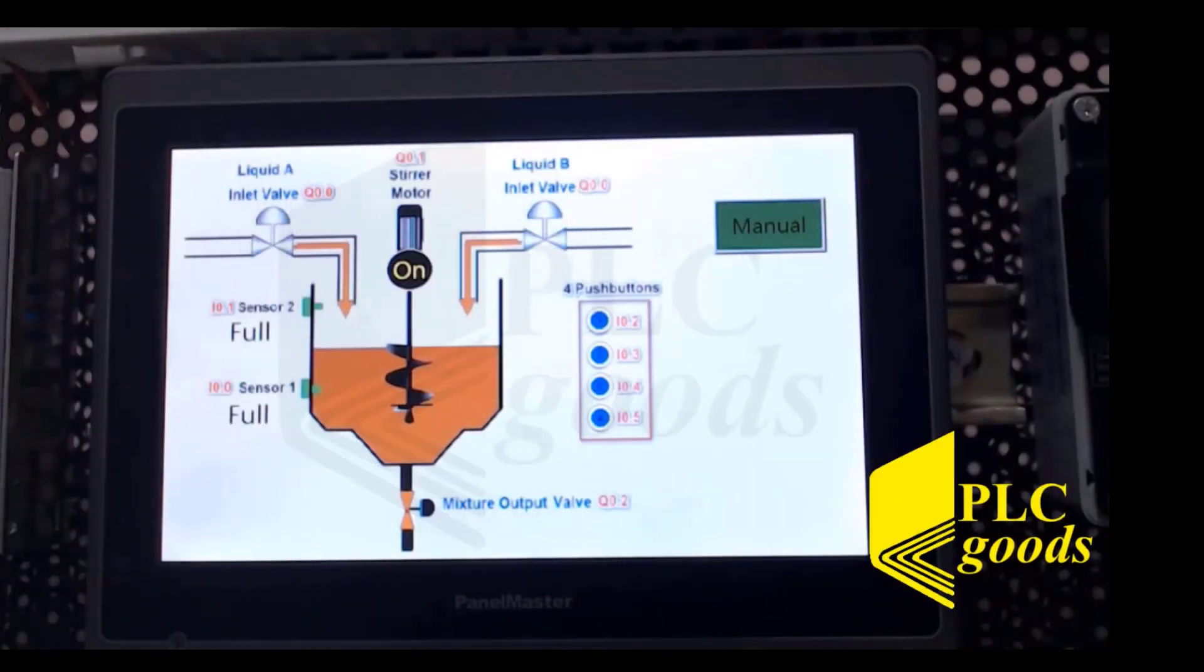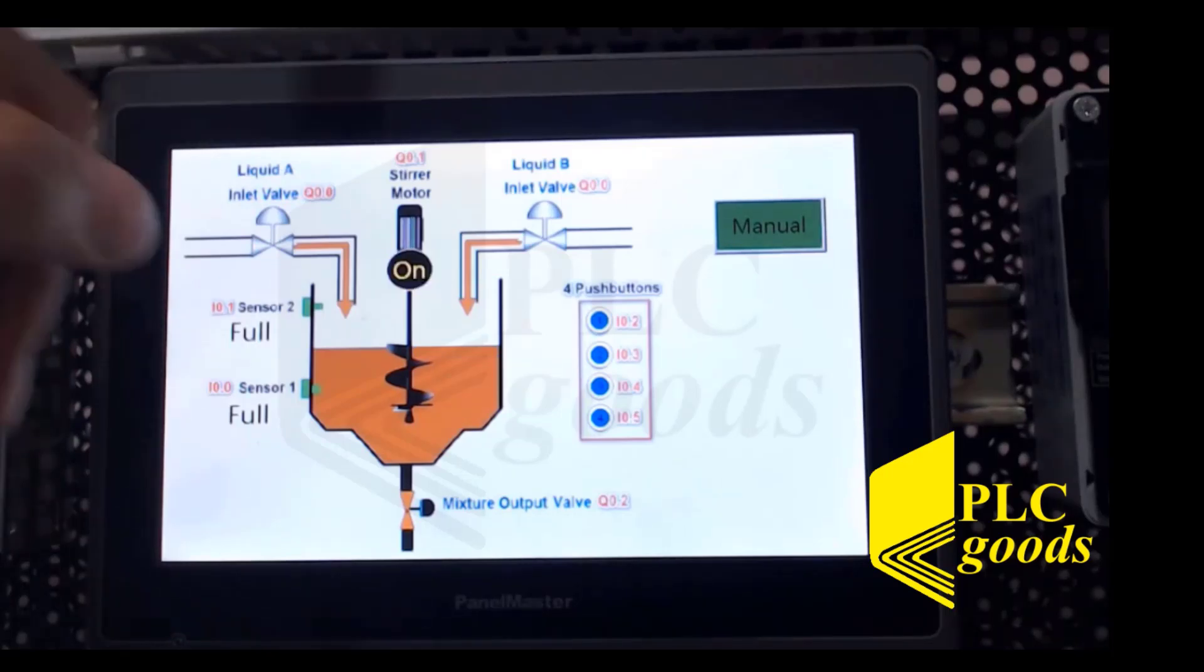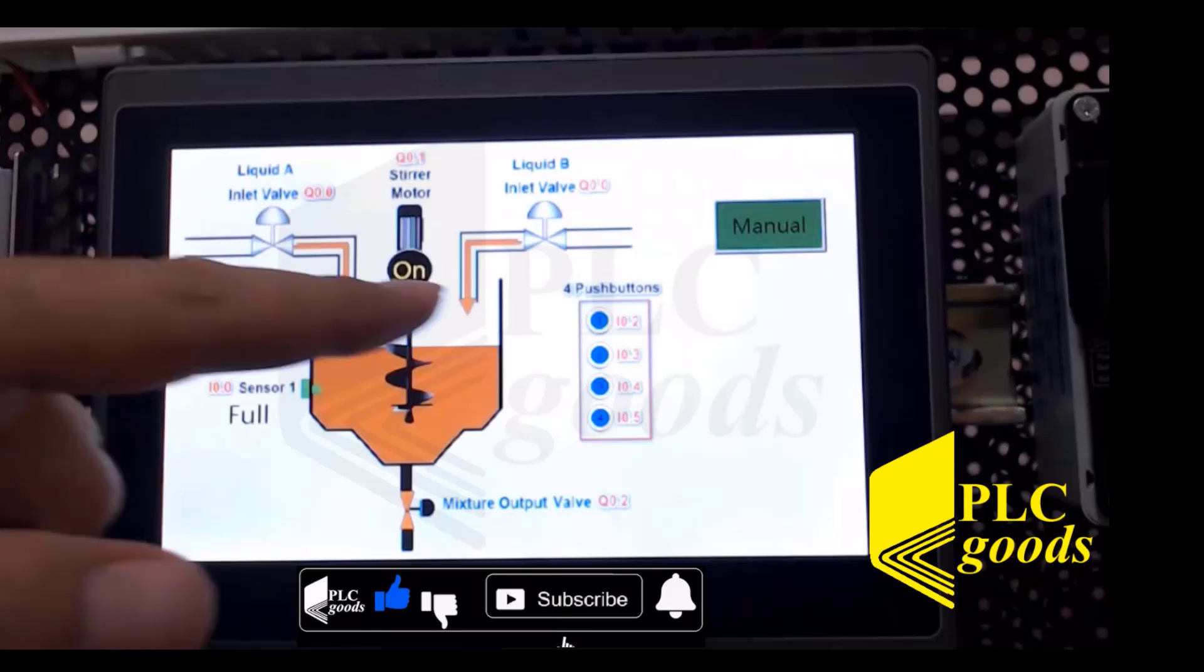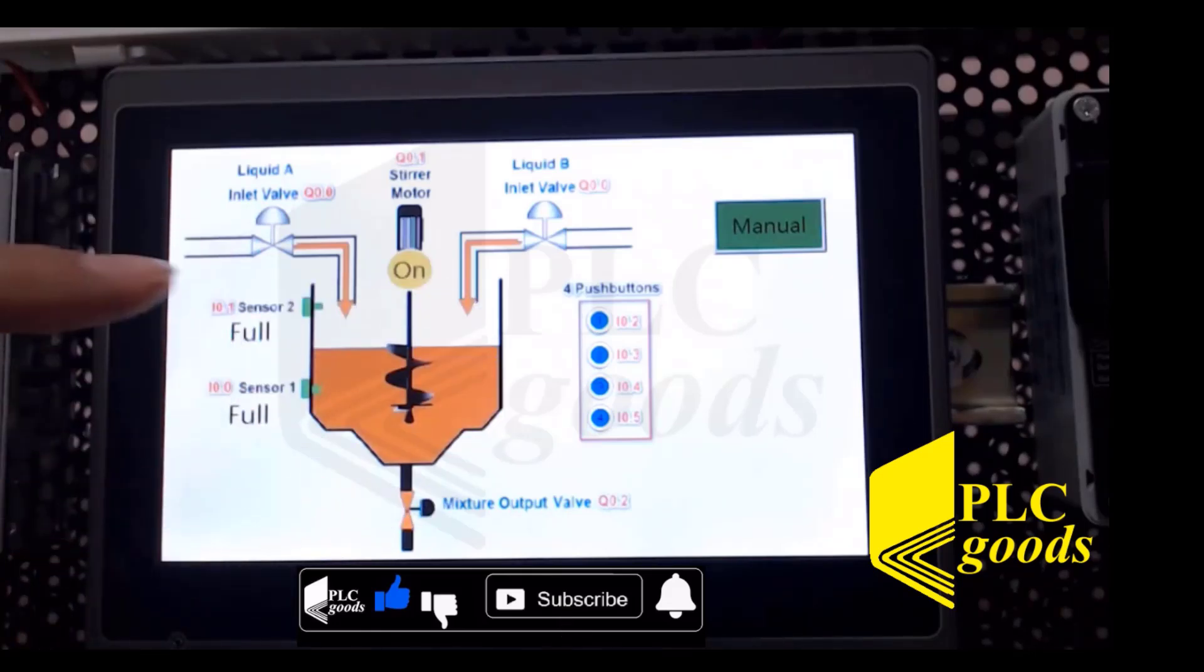Okay guys, here you see a system that has consisted of an HMI display device and the PLC that is on the bottom of it. As you see, it shows a container, it has two level sensors, sensor one and sensor two.